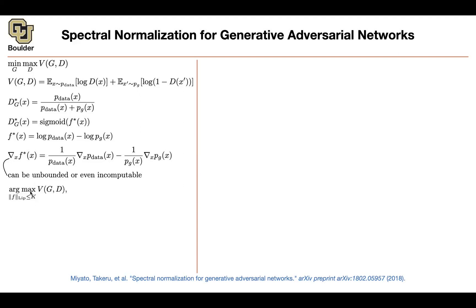So we do an argmax of V(G, D) over the family of Lipschitz continuous functions, which regularizes D. Now let's try to make neural networks Lipschitz continuous — the idea is spectral normalization. Neural networks are compositions of functions; that's exactly what makes them deep neural networks.